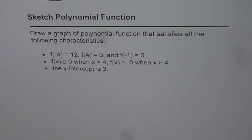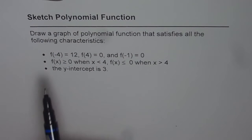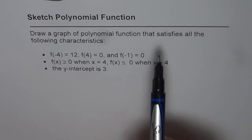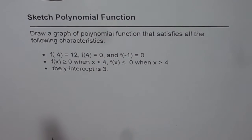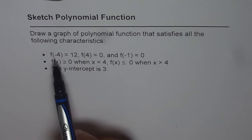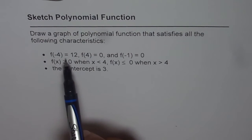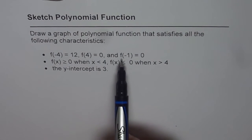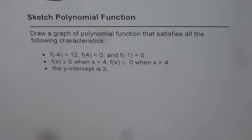Let us try to sketch a polynomial function from a given description. The question is to draw a graph of a polynomial function that satisfies all the following characteristics: f(-4) = 12, f(4) = 0, and f(-1) = 0.